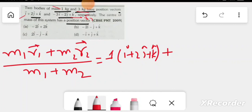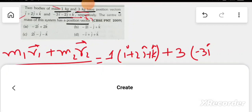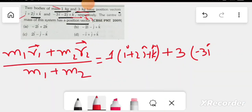Plus 3, M2. R2 position is equal to minus 3i minus 2j plus k, divided by M1 plus M2, 1 plus 3 equal to 4.